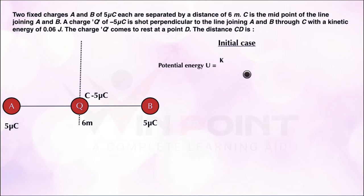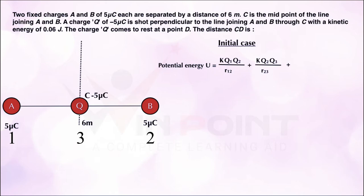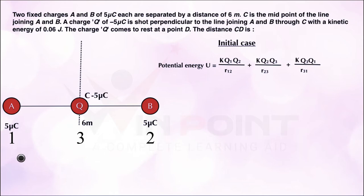The equation for potential energy is U = k·q1·q2/r12 + k·q2·q3/r23 + k·q3·q1/r31. The value of k is 9×10⁹. Charge q1 is 5 micro coulombs, which is 5×10⁻⁶ coulomb. Similarly q2 is 5×10⁻⁶ coulomb, and q3 is minus 5×10⁻⁶ coulomb. To convert micro coulombs into coulombs we multiply by 10⁻⁶. So we can now substitute all the values.